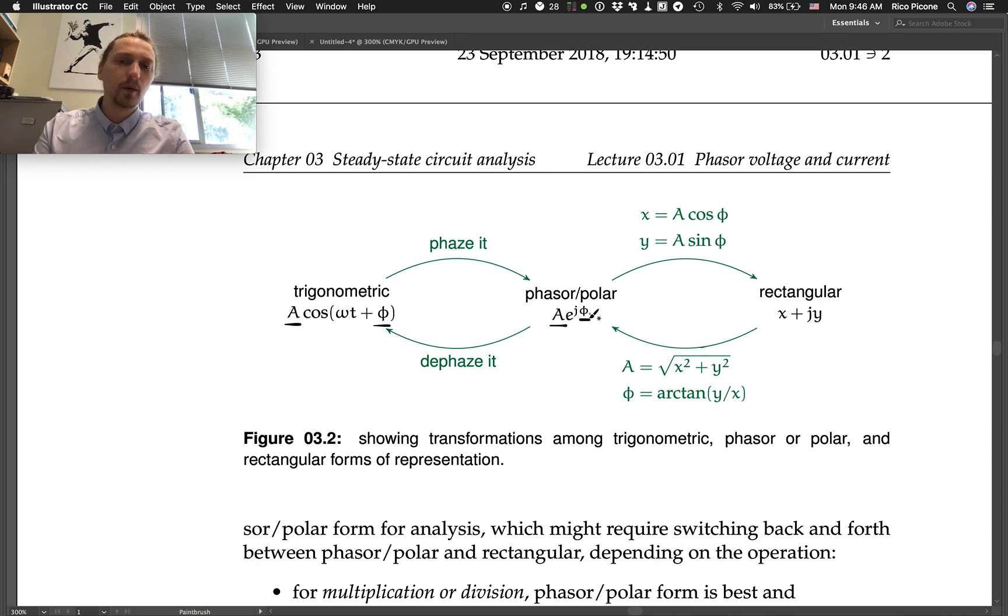We'll work with this form for a while, oftentimes going back and forth between it and rectangular form. So, another way to represent this phasor or polar representation is as a rectangular complex number. This would be polar, this would be rectangular. The way to go from phasor to rectangular or polar to rectangular is the way that you convert polar coordinates to rectangular coordinates.